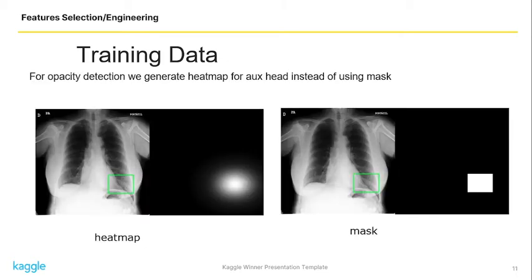Besides the masks, we also generate heat maps. These heat maps are used to train our opacity detection model. As we can see, the heat map shows the location probability of opacity, and applying this additional output improves our model performance.